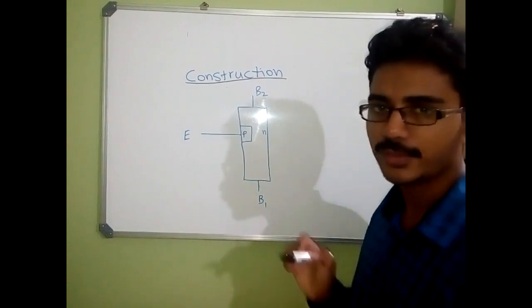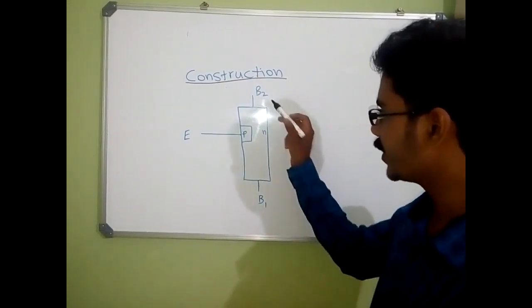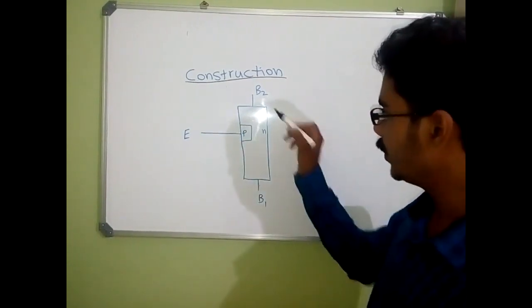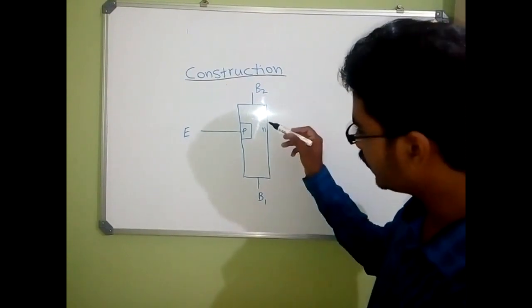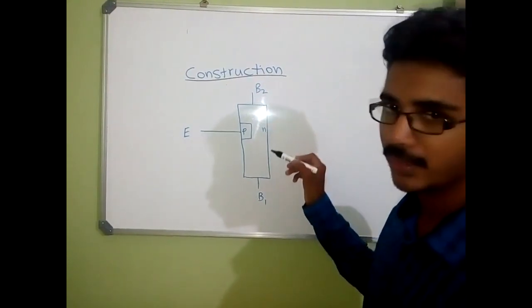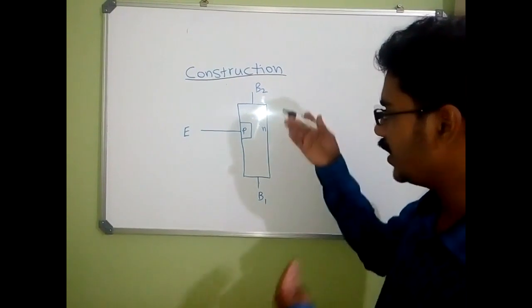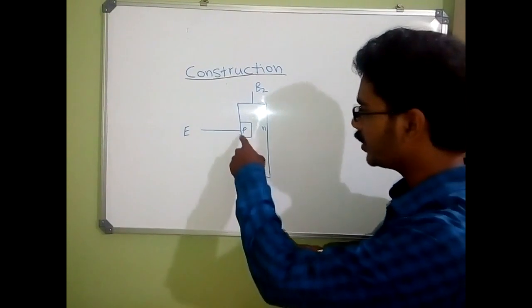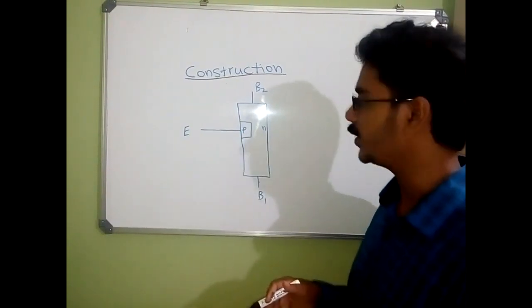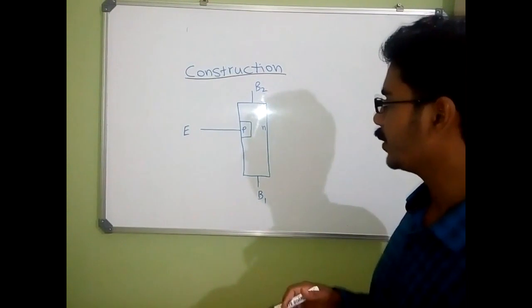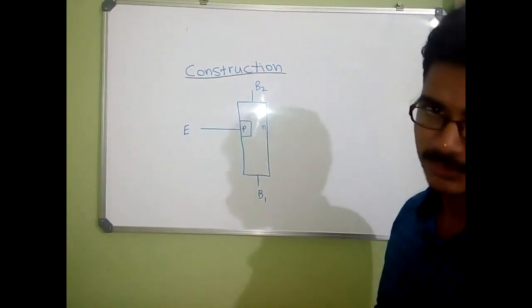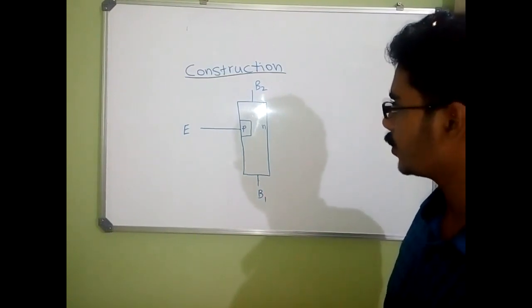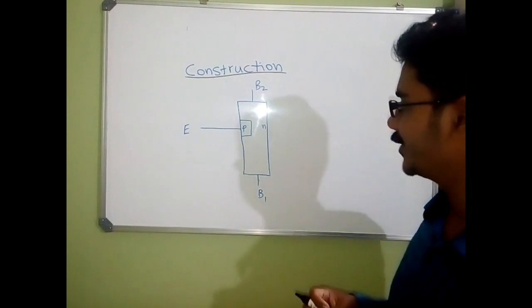This is how the construction of UJT looks. It has three terminals: B1, B2, and emitter. B1 and B2 are connected to the base. The base is an n-type material which is lightly doped, and the emitter is made up of heavily doped p-type material. It has one p-n junction, so it is called a Unijunction Transistor. This is all about the construction of UJT.